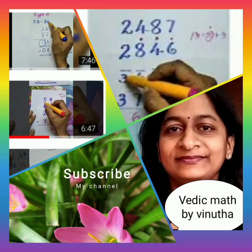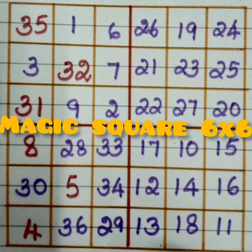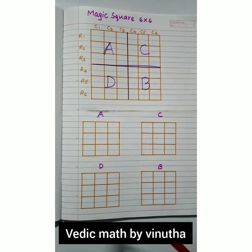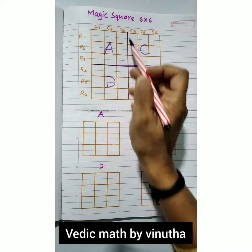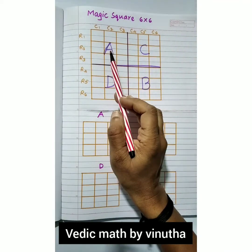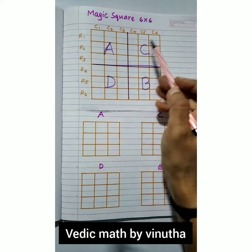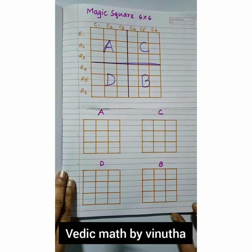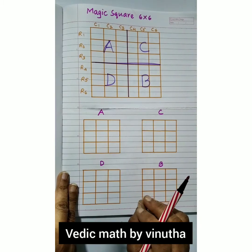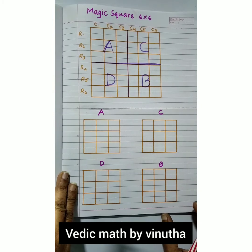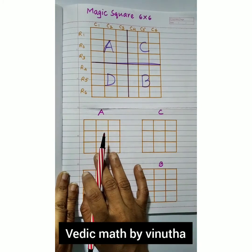Welcome to my channel. Today we are going to fill a 6x6 magic square. There are 36 boxes in total, divided into 4 sections marked as A, B, C, D. In my previous video I explained how to fill a 3x3 magic square. Let us start to fill box A, then B, C, and D.